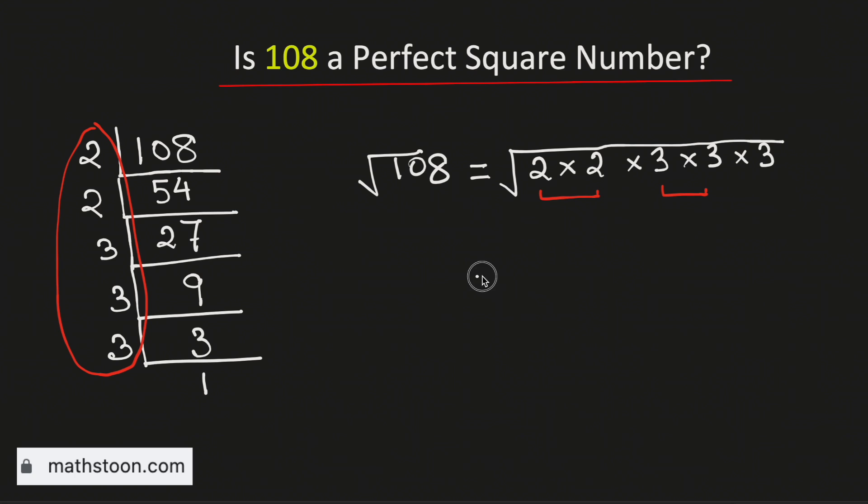And if we take the square root we get 2 times 3 times square root of 3. If we simplify it we get 6 square root of 3.